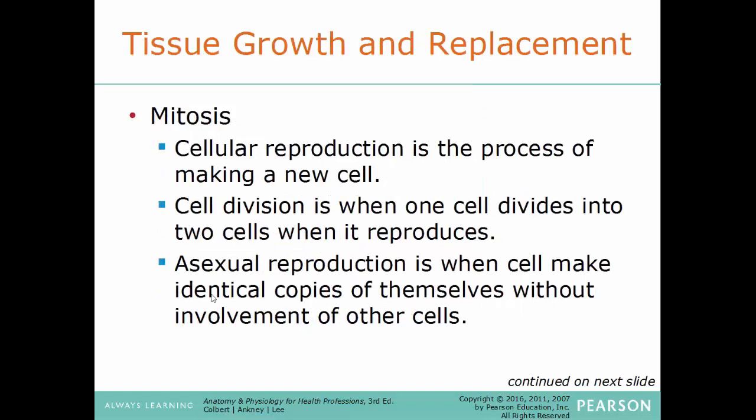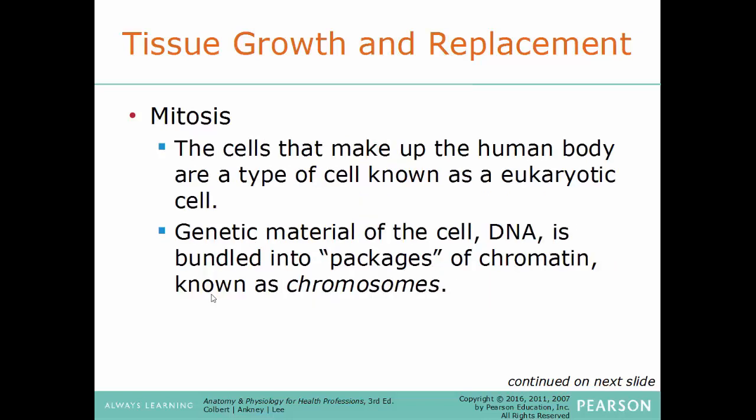We'll start with tissue growth and replacement. Mitosis — cellular reproduction — is the process of making a brand new cell. Cell division is when one cell divides into two: you start with one cell and end up with an identical copy. Asexual reproduction is when a cell makes identical copies of itself without involvement of another cell. The cells that make up the human body are eukaryotic — the prefix 'eu' means true, a reference to having a true nucleus. Prokaryotic cells refer to bacteria, while eukaryotic cells are animal and plant cells.